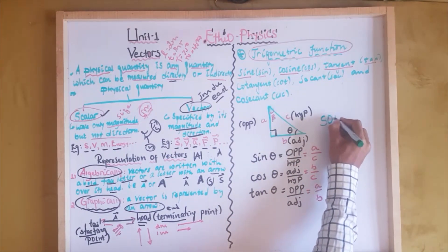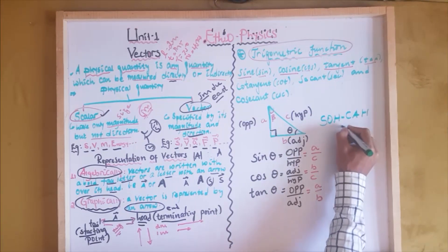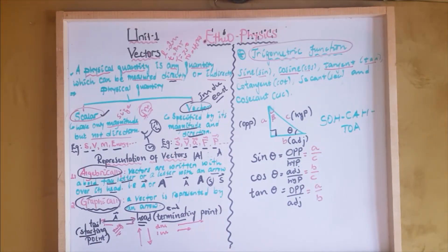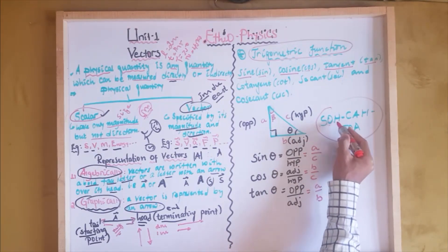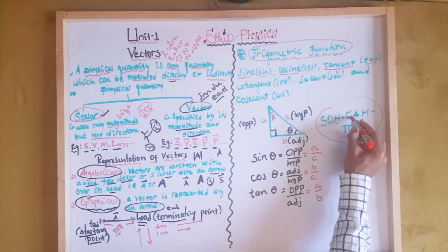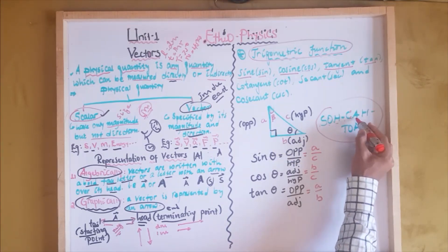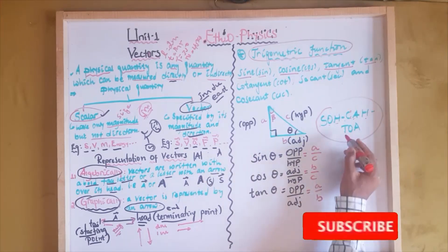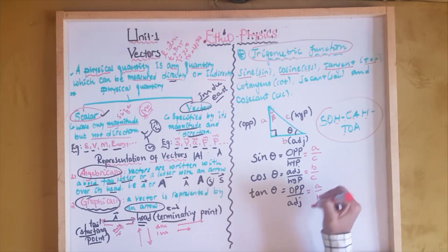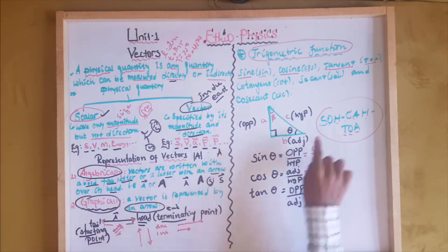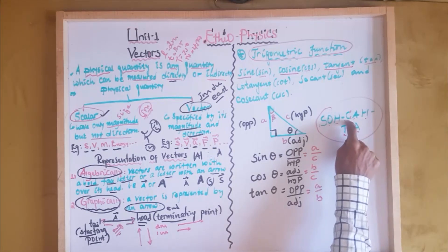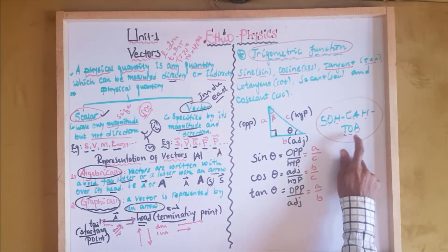You can remember these three trig functions using the abbreviation SOH-CAH-TOA. S refers to sine — opposite over hypotenuse. C refers to cosine — adjacent over hypotenuse, so cos theta is adjacent over hypotenuse. T refers to tangent — tan theta is equal to opposite side over adjacent side. Don't forget: SOH-CAH-TOA.